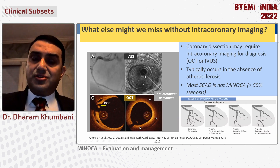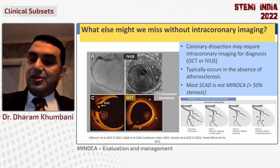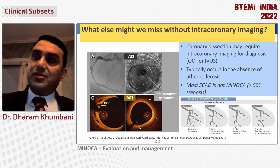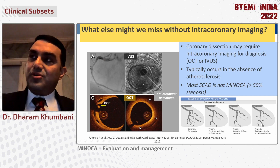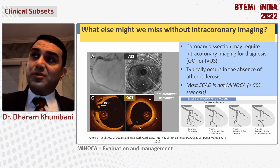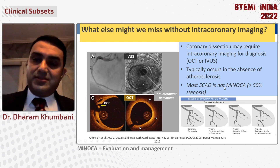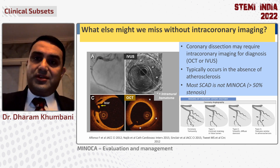Intracoronary imaging opens our eyes to a whole host of other conditions. SCAD is another condition we would not be able to identify angiographically. SCAD can be three different types: type 1 with contrast staining in the false lumen, type 2 which is typically an intramural hematoma, and type 3 which is more distal and can look just like atherosclerosis. Remember, most SCAD is not going to be MINOCA because MINOCA requires less than 50% stenosis, but subtle manifestations of SCAD can look just like that.